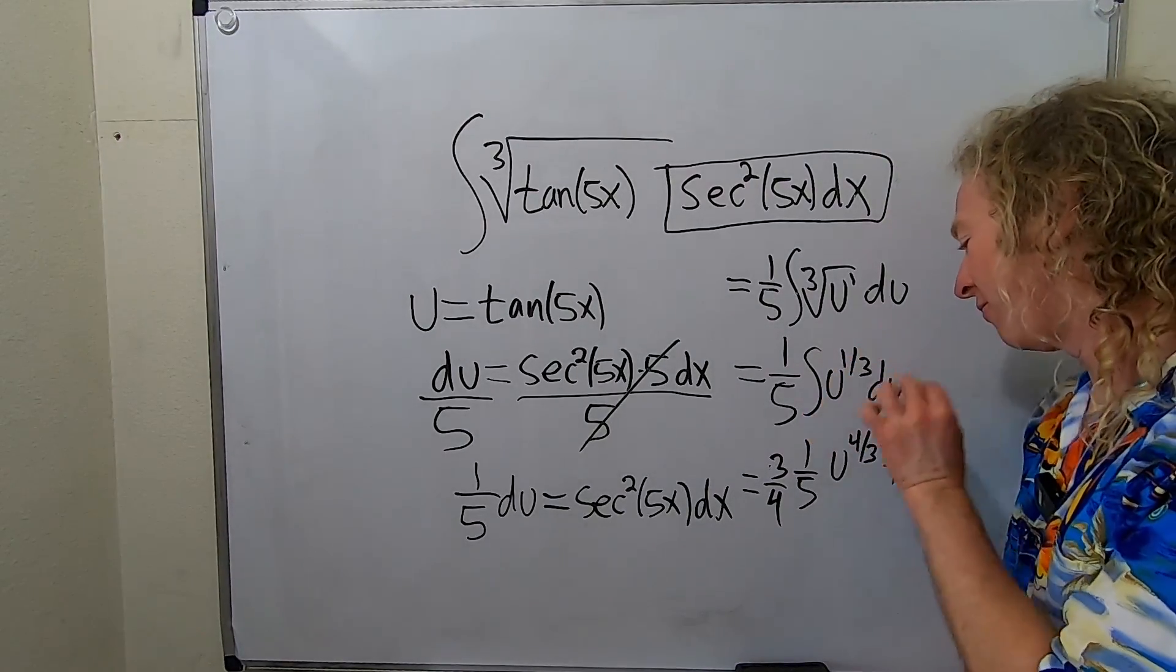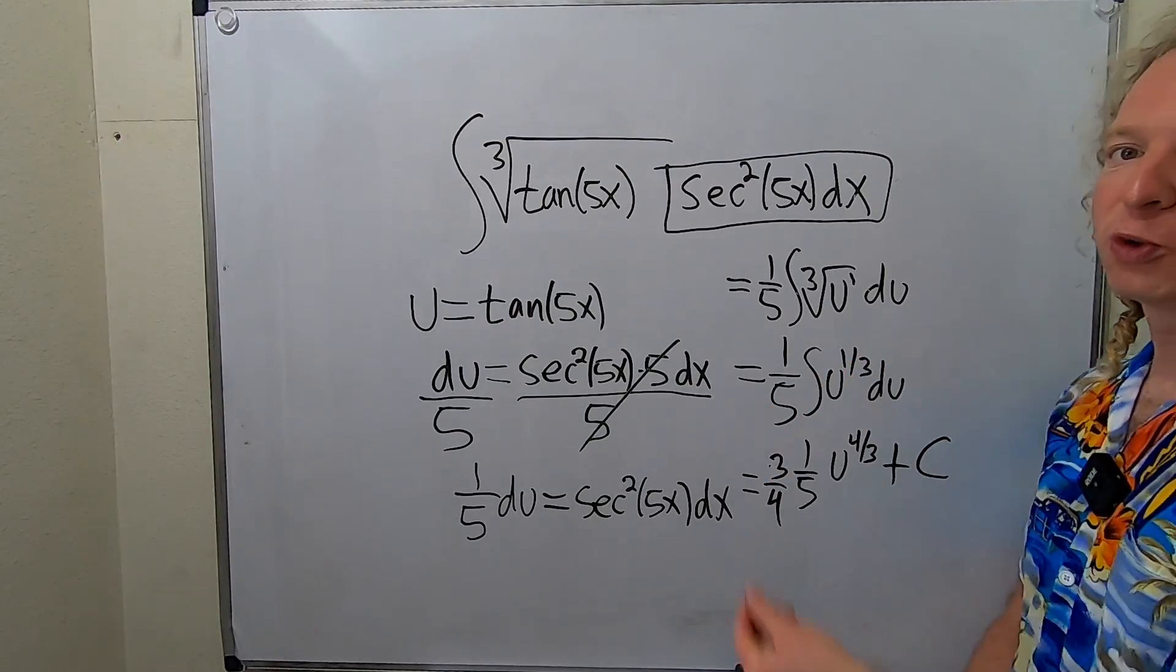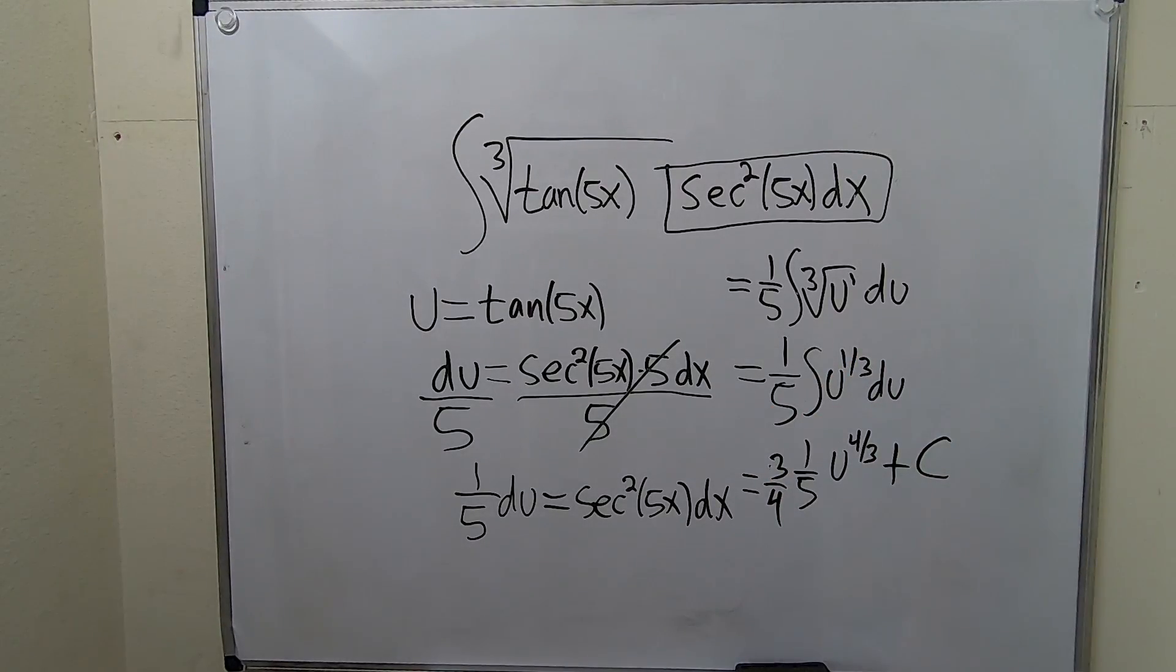So again, we added 1, so we got 4 thirds, divided by 4 thirds. That's multiplying by 3 fourths.